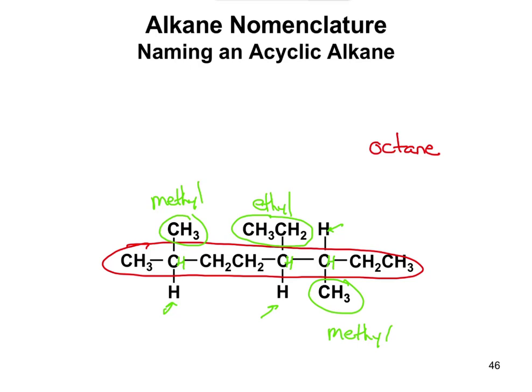Now we number the chain to give substituents the lowest possible numbers. Going left to right, the first methyl would be on carbon two. Going right to left, our first substituent would be on carbon three. So we number left to right: carbon one, two, three, four, five, six, seven, eight. Always a good idea to write out those numbers to confirm the parent chain. We have a methyl on carbon two, a methyl on carbon six, and an ethyl at carbon five.